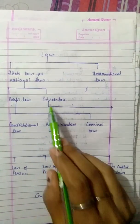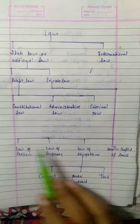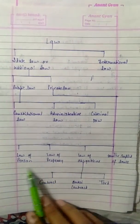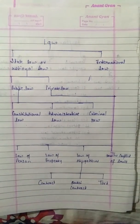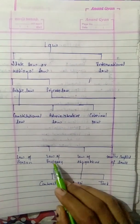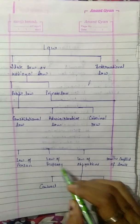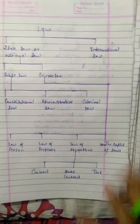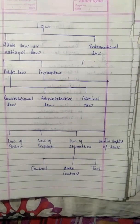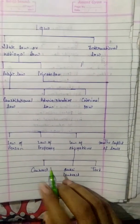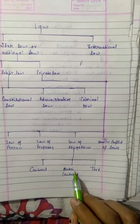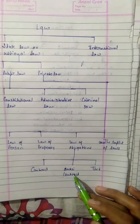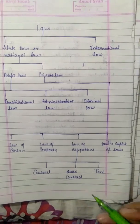Then we have private law, which is divided into four parts: law of person, law of property, and law of obligations — meaning duties, which are our contracts. What is in contract, and what is actually not a contract but will be removed from the contract, like finder of goods, will be studied.